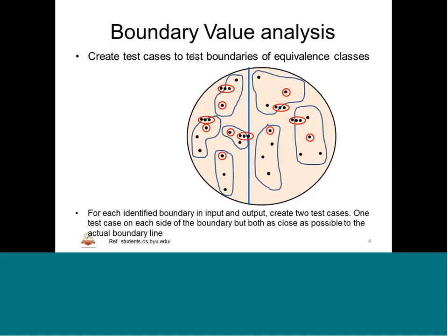The first step is to create test cases to test the boundaries of the equivalence class. For each identified boundary input and output, create 2 test cases — we know that two points are at the boundary, so 2 test cases are definitely going to be there. One test case on each side of the boundary, both as close as possible to the actual boundary line. That means how the system behaves for those boundary inputs: one for the low, one for the high; one for the negative, the other for the positive; one for below and the other for above.